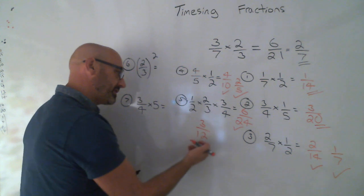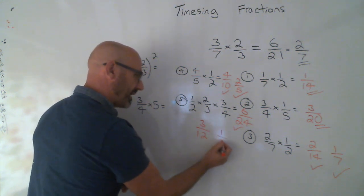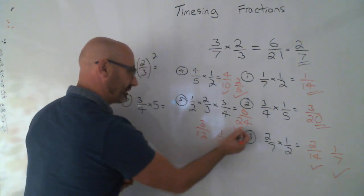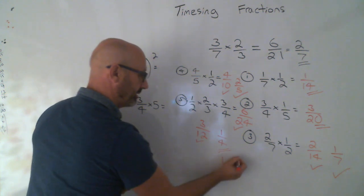3 or 2 goes into 6 three times. 2 goes into 24 twelve times. And then you can divide by 3 again, can't you? Little tick, little tick, bigger tick.